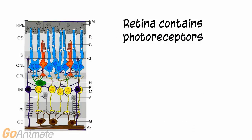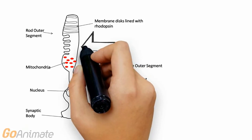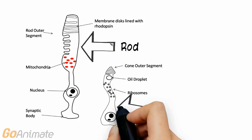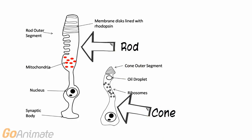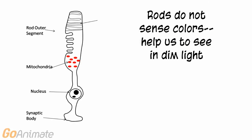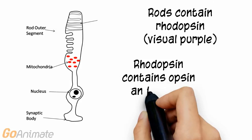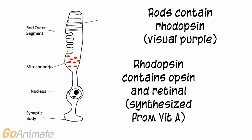The retina contains photoreceptors that respond to light. There are two types of photoreceptors: rods and cones. Rods do not sense colors, so they help us see in dimly lit conditions. Rods contain rhodopsin, or visual purple. Rhodopsin contains opsin, a protein, and retinol, which is synthesized from vitamin A.